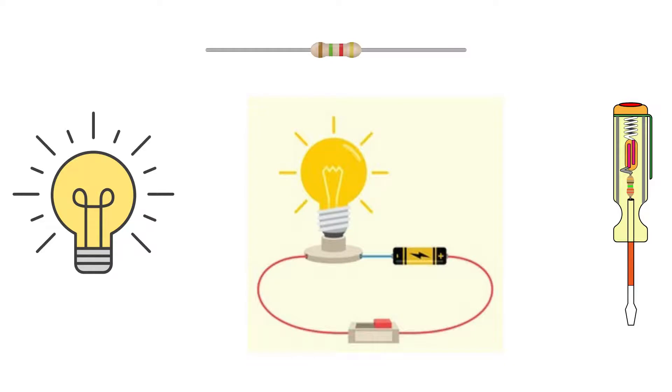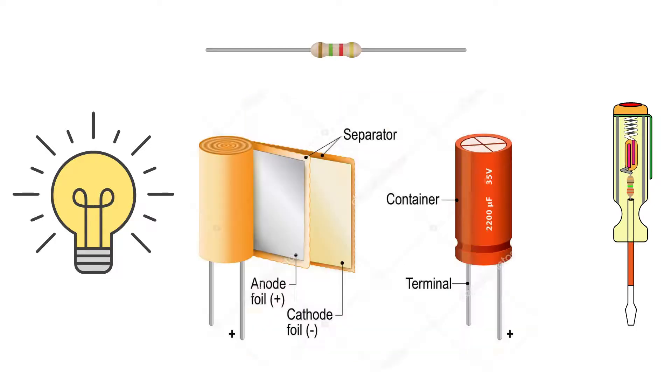If we switched a simple circuit on and off very fast, then the light would flash. But connecting a capacitor in this circuit prevents the flashing, as the capacitor would now discharge and power the circuit.